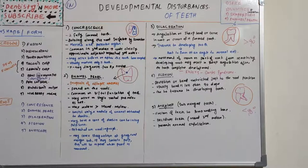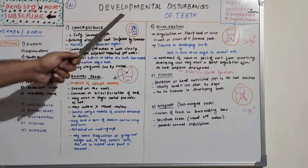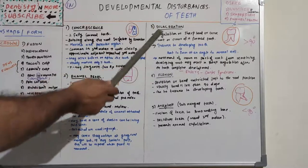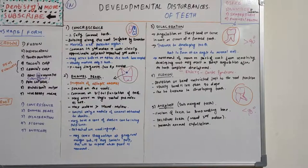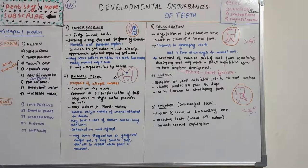These are the five developmental disturbances or anomalies with respect to root shape and form. To summarize: concrescence is joining of roots by cementum; enamel pearl is a globule of ectopic enamel present between bifurcated or trifurcated roots; dilaceration and flexion are bendings of the root greater than and less than 90 degrees respectively; and ankylosis is fusion of the tooth to the surrounding bone. Thank you.